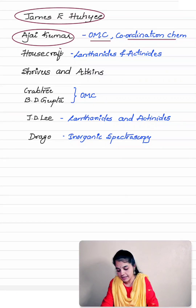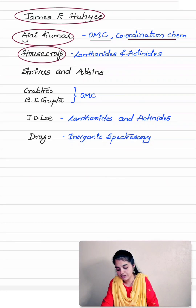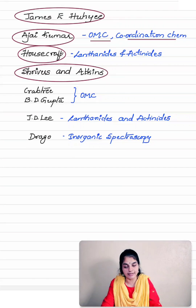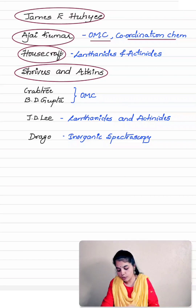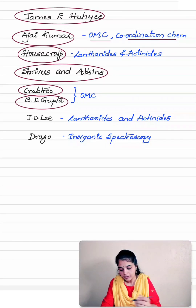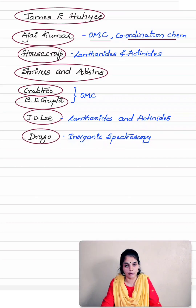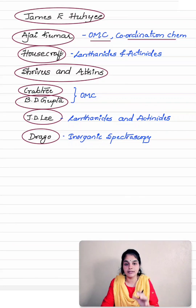For lanthanides and actinides, you can refer Holscroft. You can also refer inorganic chemistry by Shriver and Atkins, as most topics are covered in that book. A very good reference book for organometallic chemistry is by Crabtree, as well as organometallic chemistry by B.D. Gupta. For lanthanides and actinides you can also refer J.D. Lee. For inorganic spectroscopy, you can refer the textbook by Drago. These are all good reference books for the inorganic chemistry syllabus.